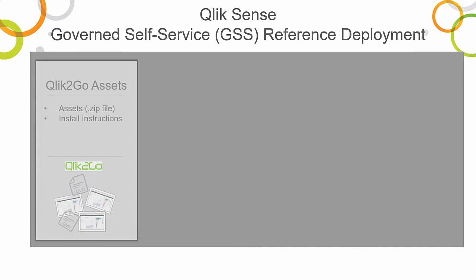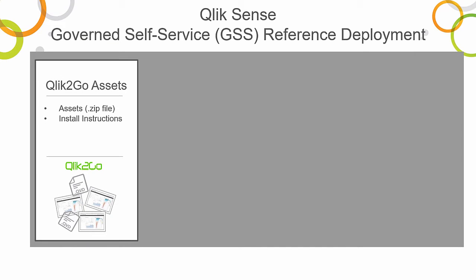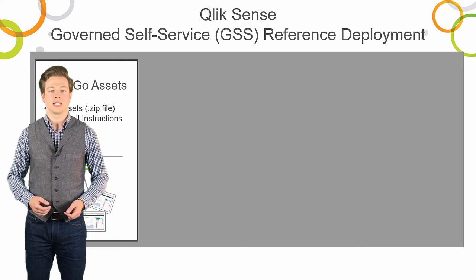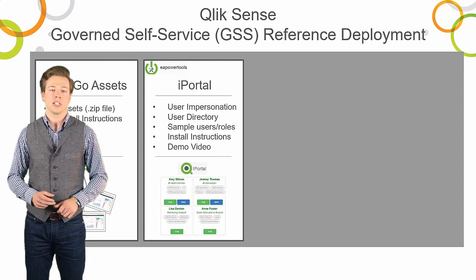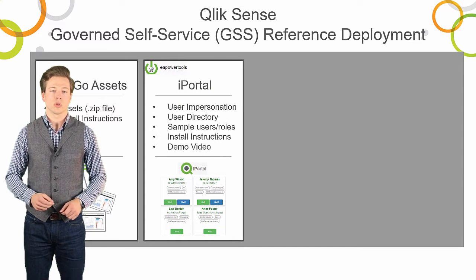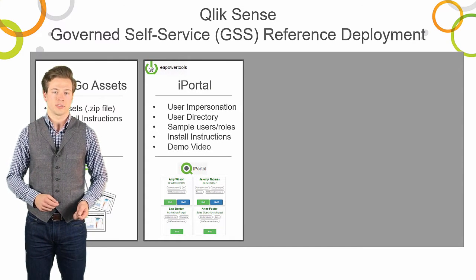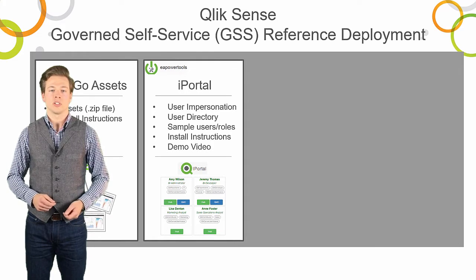The first component is known as Qlik2Go. It is a collection of Qlik Sense apps and data that help you use and test governed self-service without disrupting any existing deployment. The second component is the iPortal interface — it allows you to log into Qlik Sense as a number of sample users.